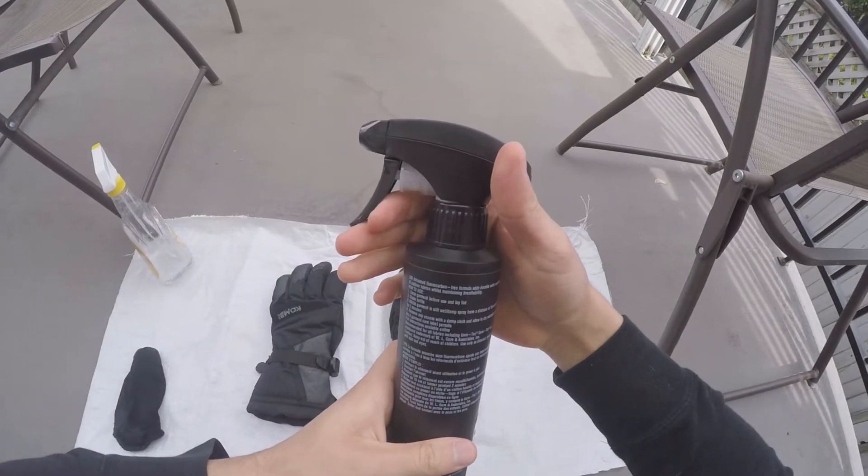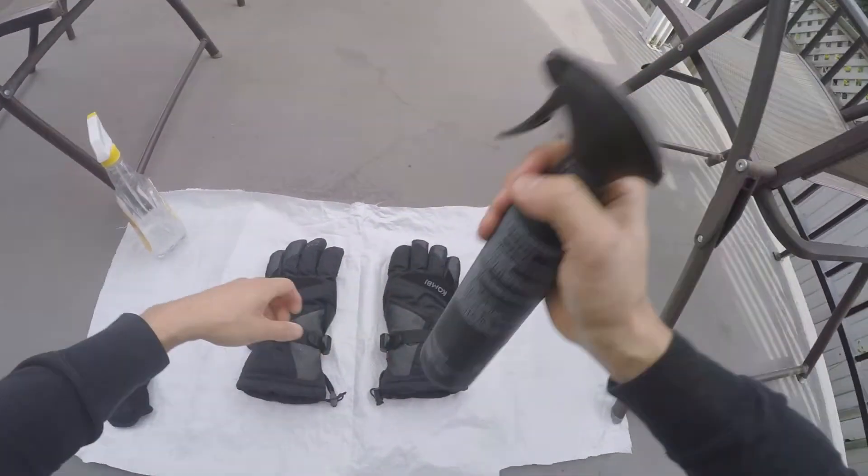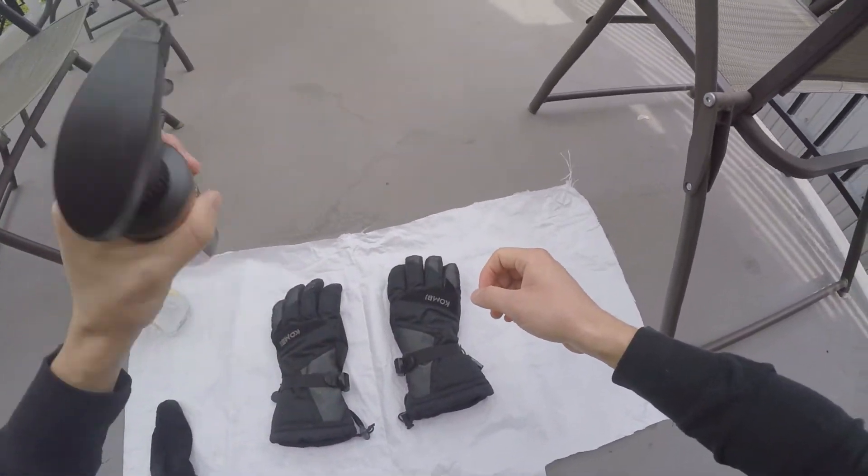Once your garment is clean and slightly damp, it is time to grab your Granger's spray bottle and give it a good shake for about 20 seconds.